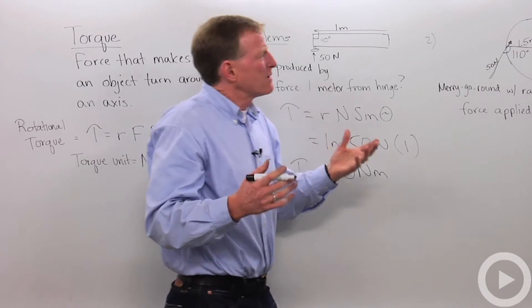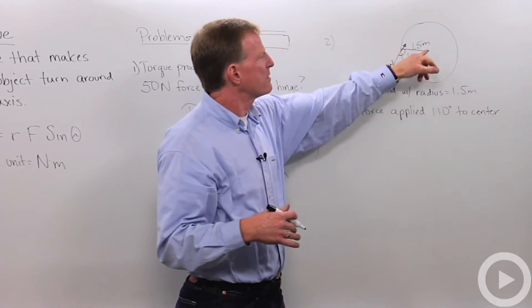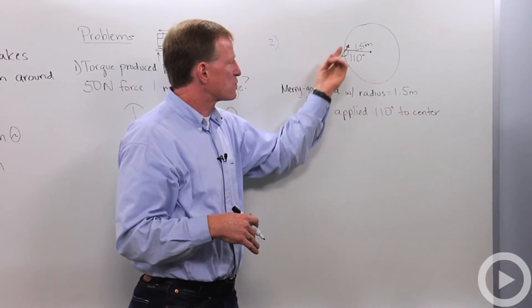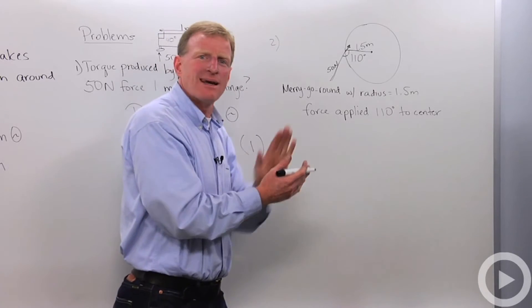Now let's say we've got a merry-go-round, and we're pushing a small merry-go-round. The radius of that merry-go-round is one and a half meters, and I'm pushing it at an angle. I'm not pushing it tangentially.